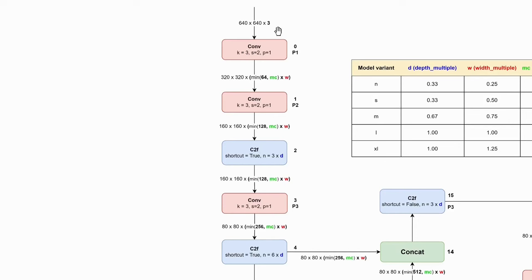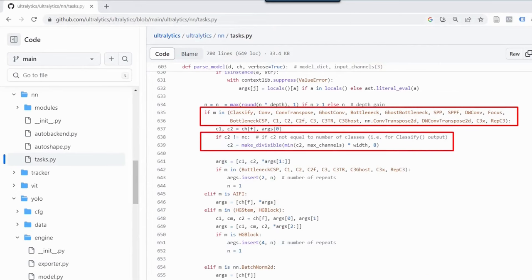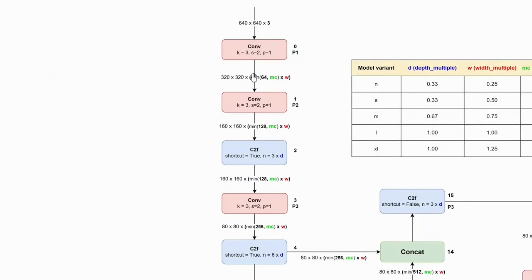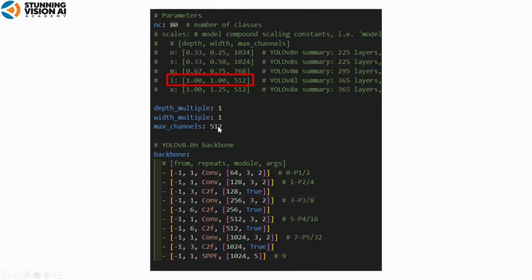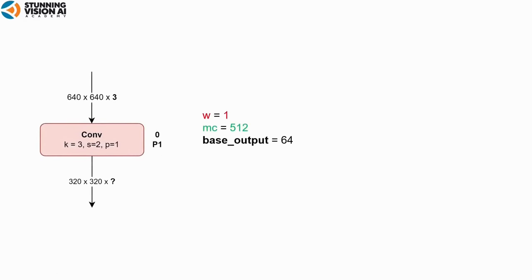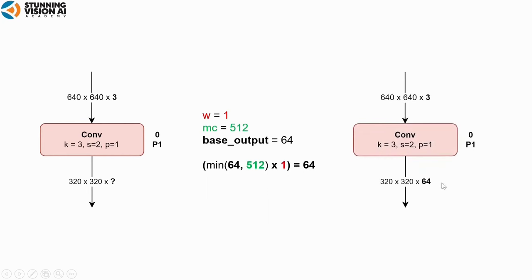To obtain the output channel, use the following formula, which comes from the code in the tasks.py file. First, find the minimum value between the base output channel and max channels, then multiply that minimum value by the width multiple parameter. For example, calculating the first convolutional block's output channel using the YOLOv8L variant with a width multiple of 1 and max channels of 512: the base output channel is 64, so the minimum of 64 and 512 is 64, multiplied by 1, giving an output channel of 64.